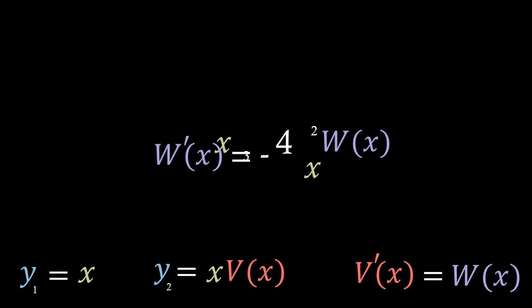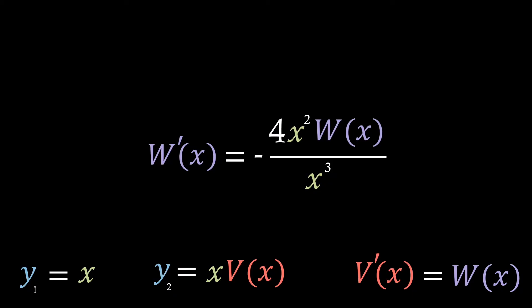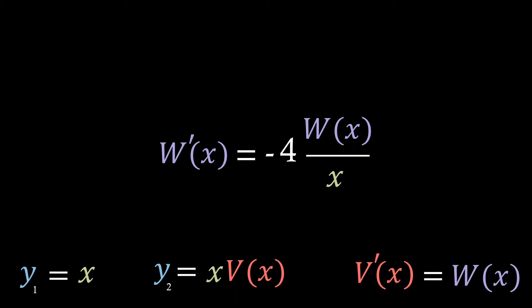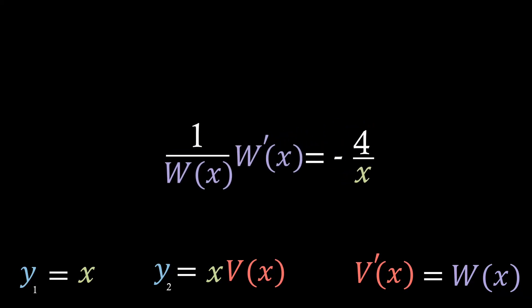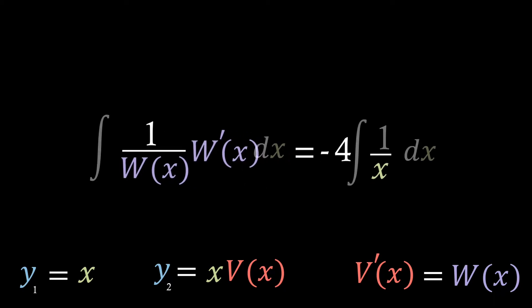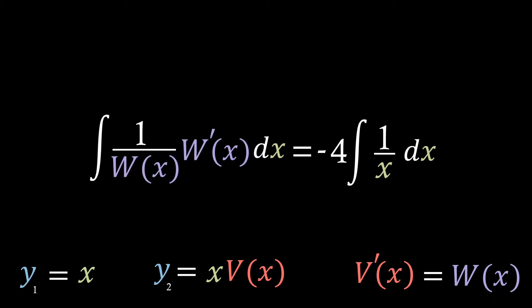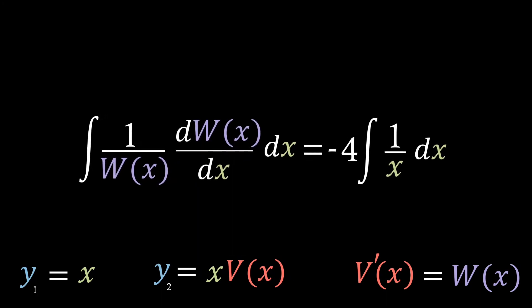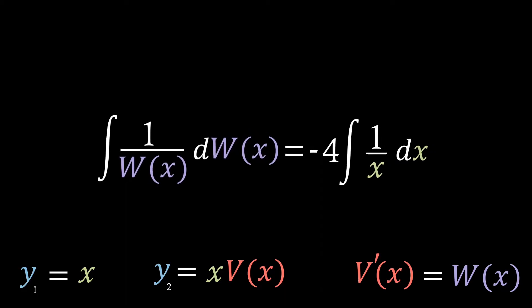Therefore, if we begin by getting all the x's to one side and then divide both sides by w, we will have separated both variables. Hence we get that 1 over w times the differential of w equals minus 4 over x, and we can continue following the same procedure as in the first video by taking the differential in terms of x. If we rewrite the differential of w into its actual form, we'll be able to see how the dx's cancel more clearly.